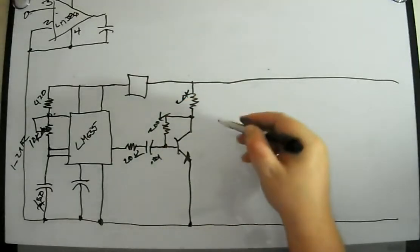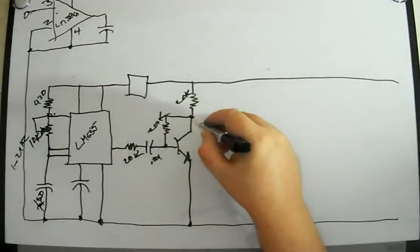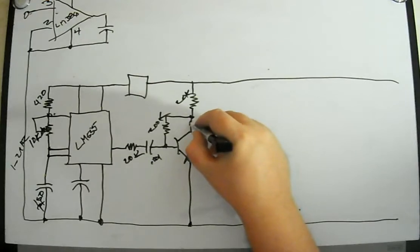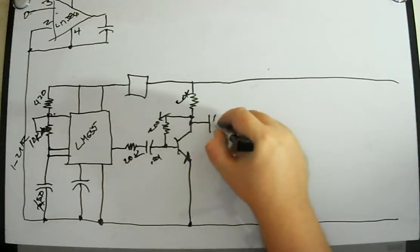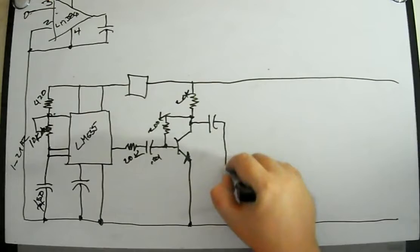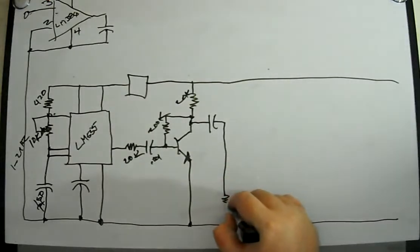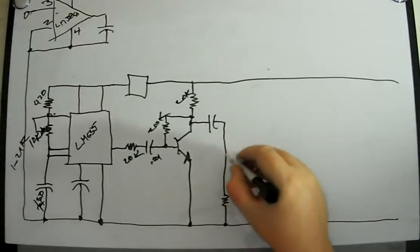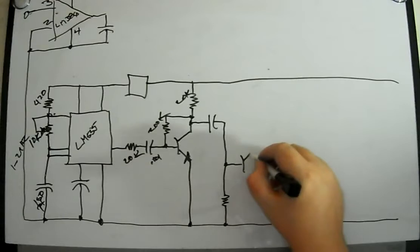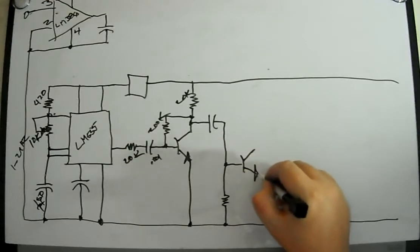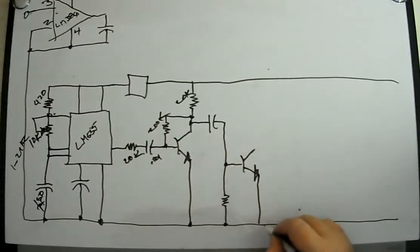And now what we've done is we've created an amplifier here for the 555 signal. We'll take that signal and we'll couple it through yet another capacitor. We'll put a resistor down here, and you see this resistor sets the input impedance and helps bias the next stage, which is yet another amplifier, another transistor.